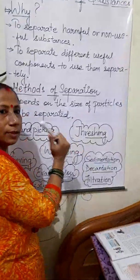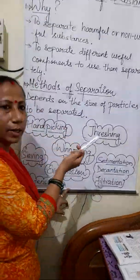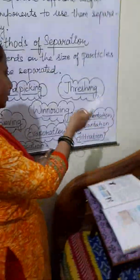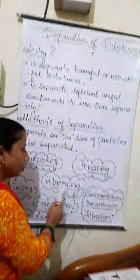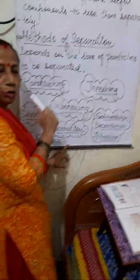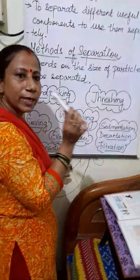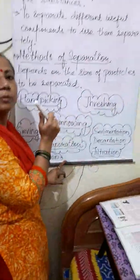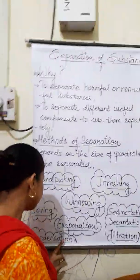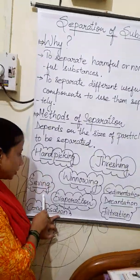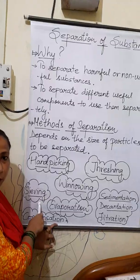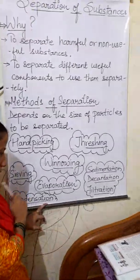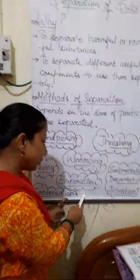Threshing is done by machine to remove the stalk from the grains. Winnowing is what your mother does to remove stones or husk particles from wheat and other grains. Sieving is used to sieve wheat flour and also to sieve tea leaves.